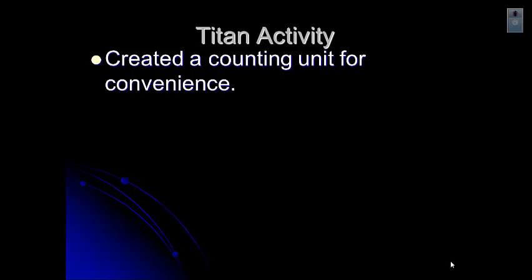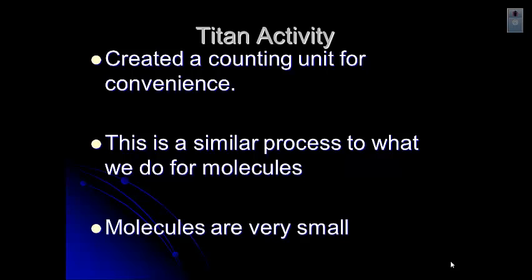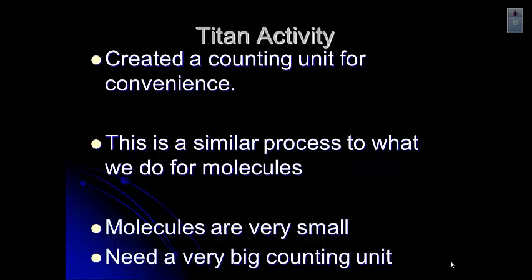So we created this counting unit for convenience, and we called it a Titan. And that's a really similar process to what we do for molecules. The reason we do that is molecules are tiny. When we're dealing with chemistry most of the time, now some chemists deal with molecules individually, but typically when we're talking about chemists, we're dealing with amounts that we can see. So we need to use a counting unit that allows us to deal with even drops. Drops have billions of molecules in them. So molecules are really tiny, so we need this giant counting unit so we can count them.